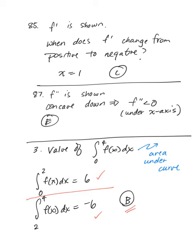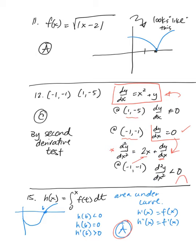In number 3, we're finding the integral from 0 to 4 of f of x — the area underneath the curve. We break it up: from 0 to 2 equals 6, and from 2 to 4 equals negative 6. Adding those together gives 0, or choice B. In number 11, we're given the square root of the absolute value of x minus 2. The absolute value looks like a V, and taking the square root softens the slopes near x equals 2. The function is continuous at 2 but not differentiable — that's choice A.